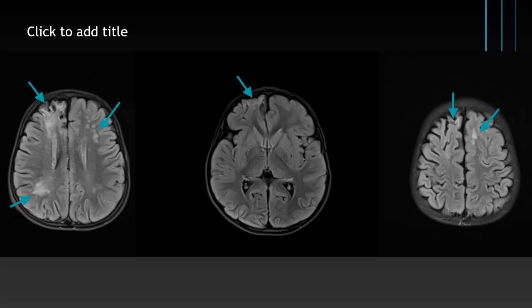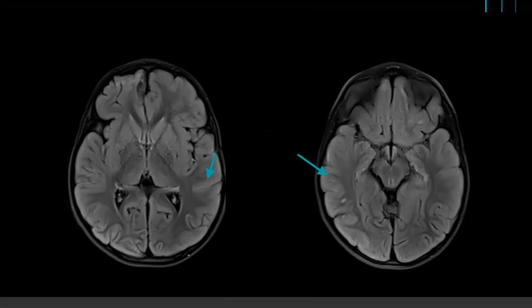Axial FLAIR images show a gliotic area in the right frontal lobe, multiple hyperintensities in bilateral deep and subcortical white matter representing chronic ischemic areas. Subtle linear hyperintensities are seen along the sulci bilaterally.